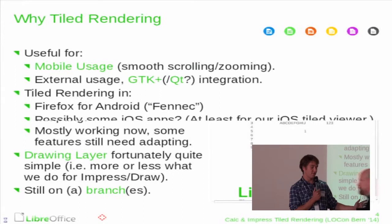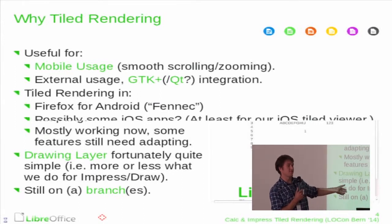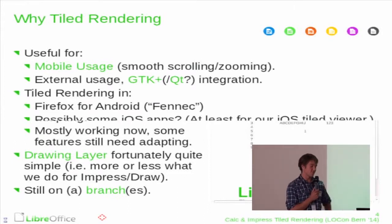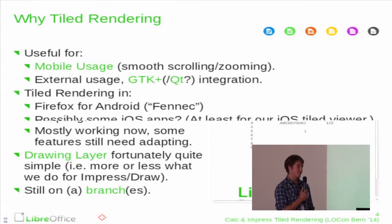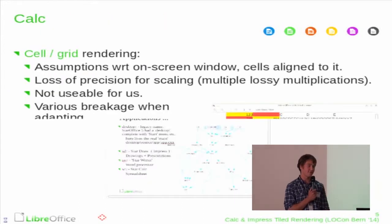Calc has a background layer of cells and content, and a drawing layer on top of that, which was very simple to implement — basically the same as what I did in Impress and Draw. Impress is quite hard to find where you actually plug into it; it has a very complicated design. But after a few days I realized how to use it and it was about five lines of code to make everything work. Draw uses the same code and also works for free.